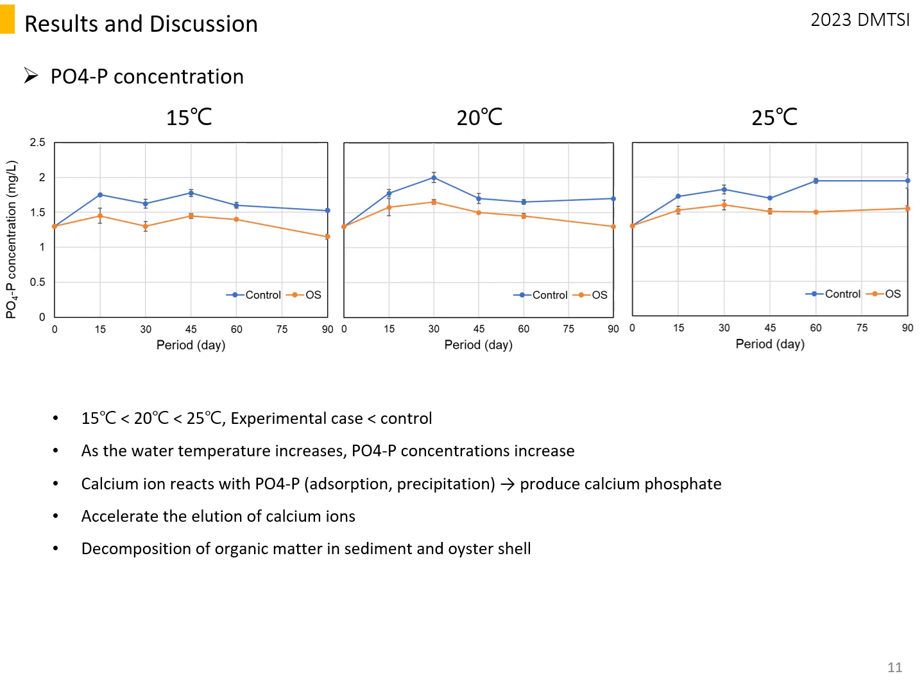The mechanism is that calcium ions eluted from oyster shell react with phosphate in pore water to form calcium phosphate. In particular, high temperature can promote calcium leaching from oyster shell.